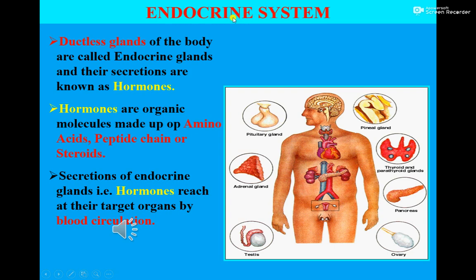What is the Endocrine System? The Endocrine system can be defined as a system that consists of ductless glands of the body. Their secretions are known as hormones.